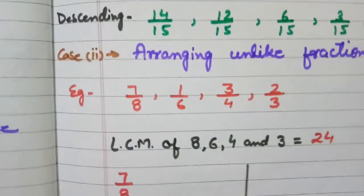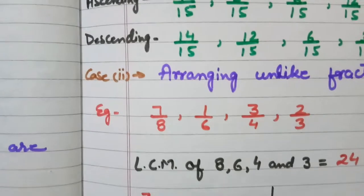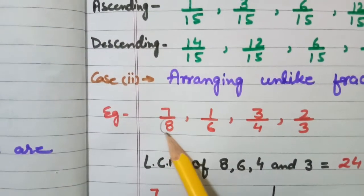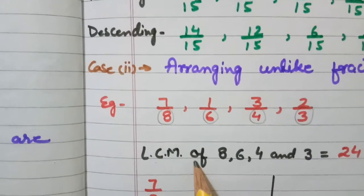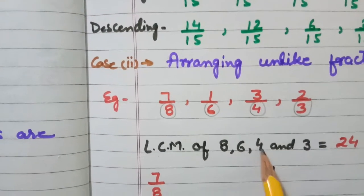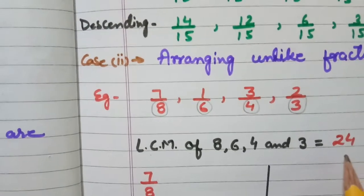For this, our first step will be, you have to find out the LCM of all the denominators. Denominator 8, 6, 4 and 3. We will write LCM of 8, 6, 4 and 3. It is 24. I have already taken out the LCM.